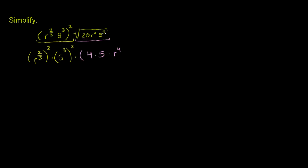Now let me write s to the 5th also as a product of a perfect square and a non-perfect square. r to the 4th is obviously a perfect square — its square root is r squared. But let's write s to the 5th in a similar way. So s to the 5th we can rewrite as s to the 4th times s to the 1st, which is s to the 5th. And of course all of this has to be raised to the 1/2 power.